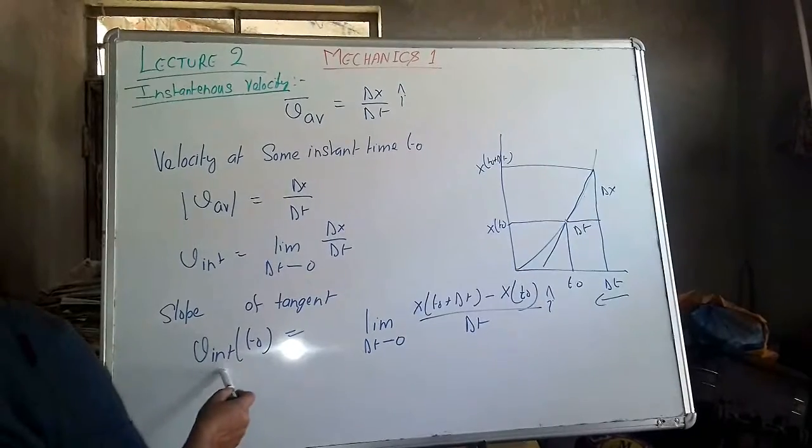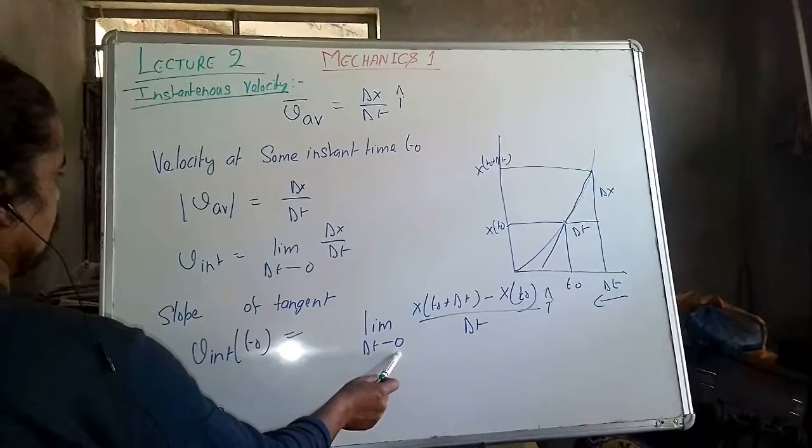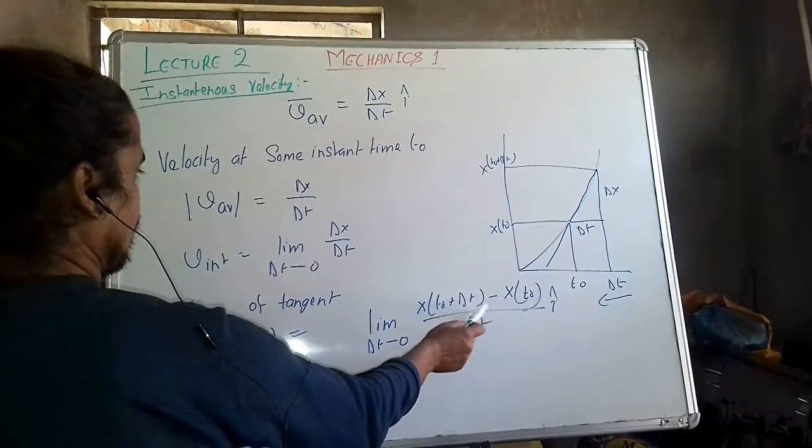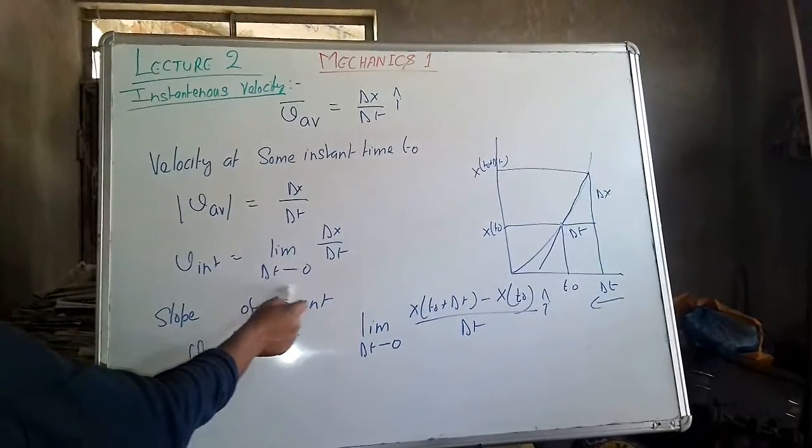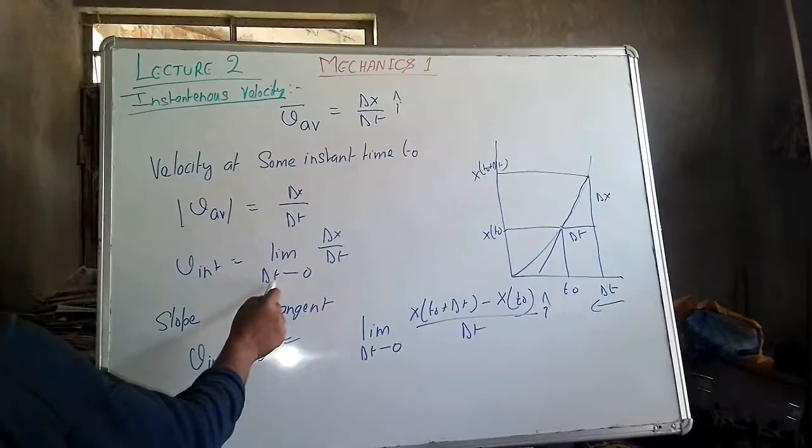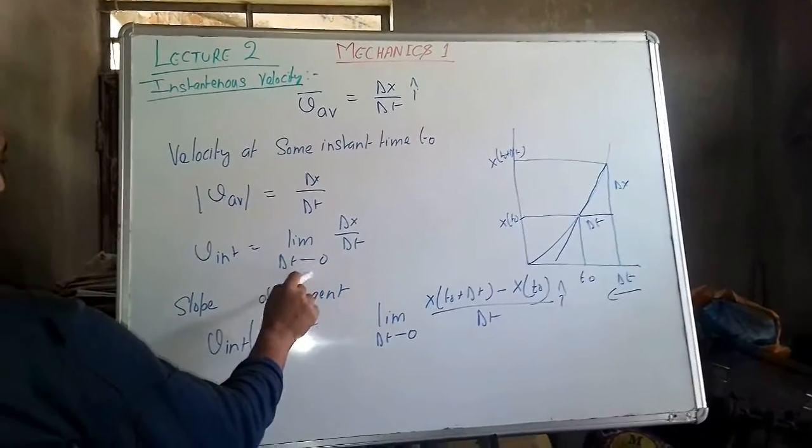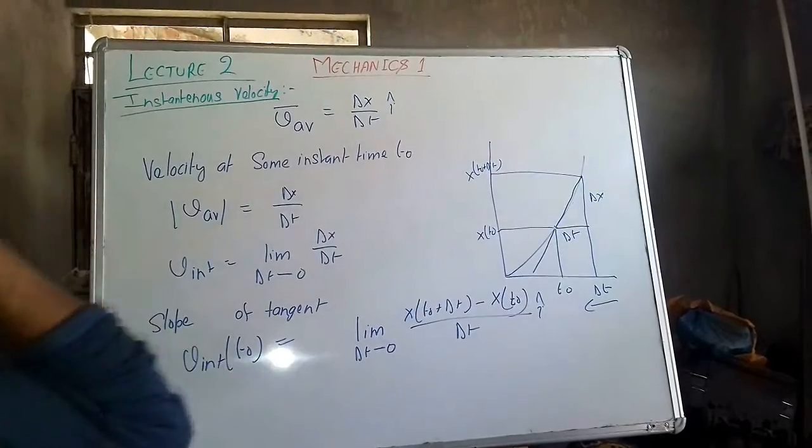So V instantaneous t naught will be the limit delta t tends to 0 of x at t naught plus delta t minus x t naught divided by delta t. So this is the instantaneous velocity where we have set the limit of delta t becoming 0. This is the definition of instantaneous velocity.